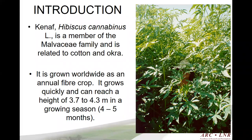By introduction, Kenaf with the Latin name Hibiscus cannabinus is a member of the Malvaceae family and is related to cotton and okra. It is grown worldwide as an annual fiber crop. It grows quickly and can reach a height of 3.7 to 4.3 meters in a growing season of 4 to 5 months.